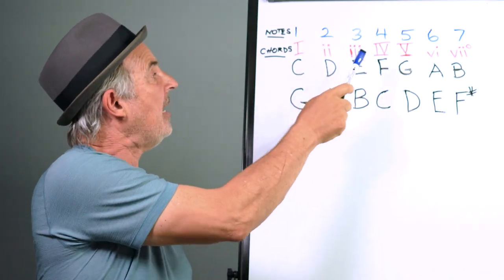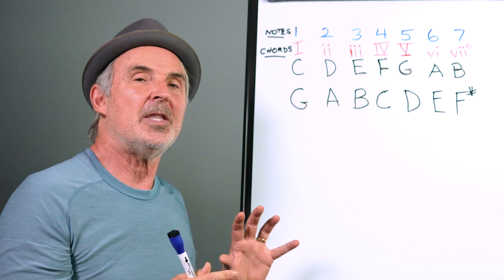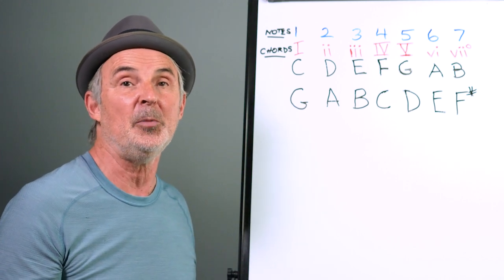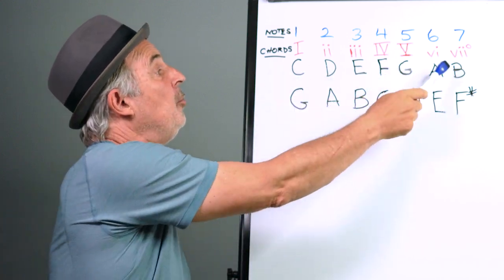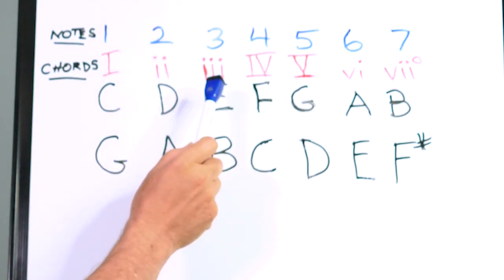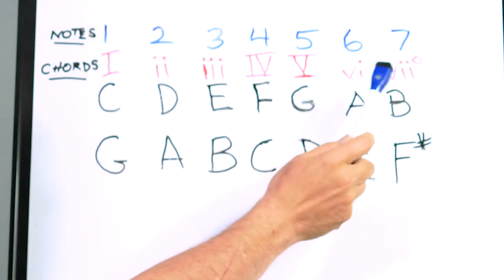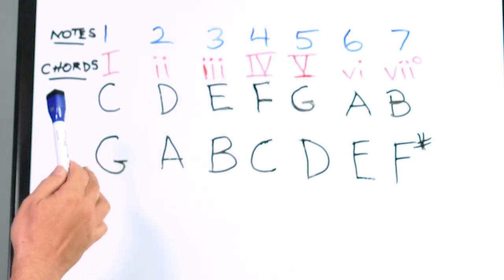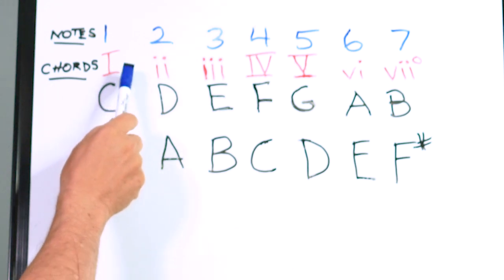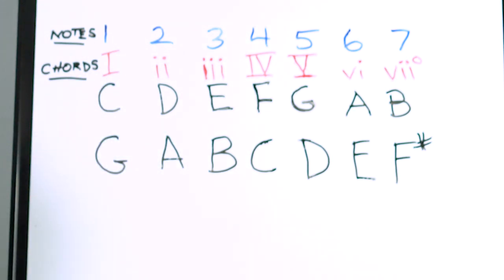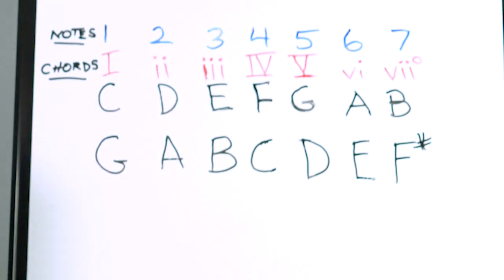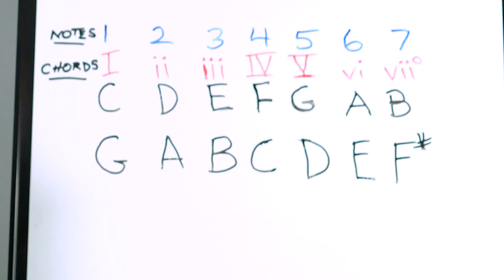When we number like that we're usually talking about notes, but when we talk about chords we usually change that to Roman numerals — it's a common thing in music. I've written the Roman numerals up here: 1, 2, 3, 4, 5, 6, and 7. You'll notice the Roman numerals don't all look alike. For chords that naturally fall as major I've written a capital Roman numeral, and for the ones that naturally fall minor I've written a lowercase Roman numeral.